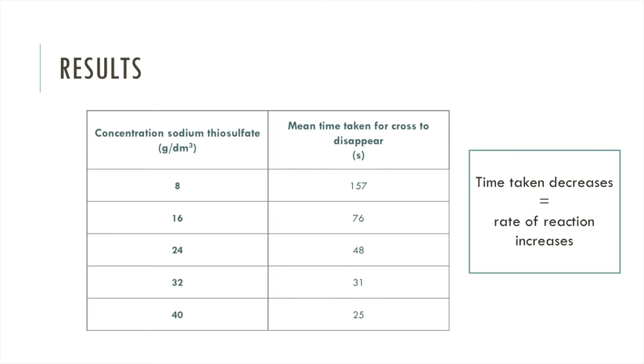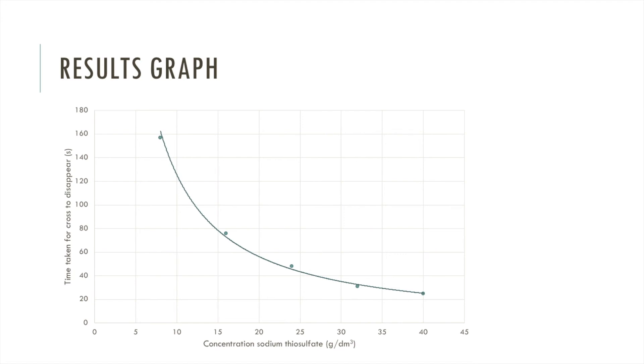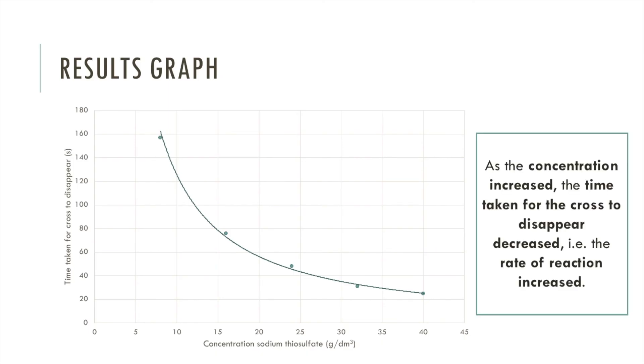Now I'm going to plot this on a graph. Here is my graph with the time taken for the cross to disappear on the y-axis and the concentration of sodium thiosulfate on the x-axis. You can see this graph is non-linear. We don't get a straight line. But you can see that as the concentration increases, the time taken for the cross to disappear is decreasing, meaning the rate of reaction is increasing.